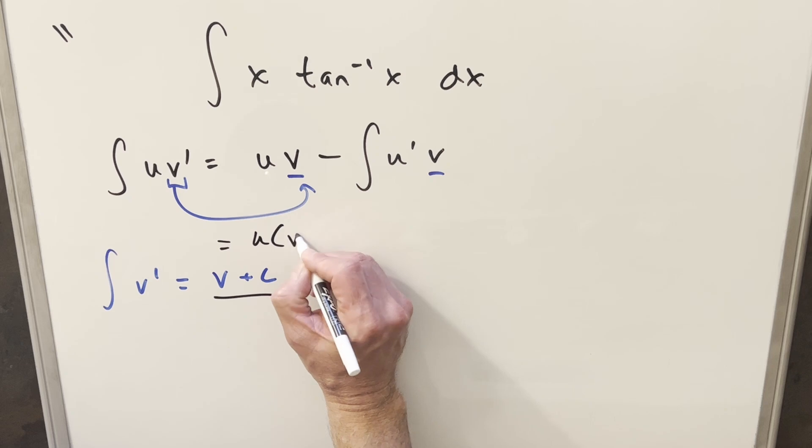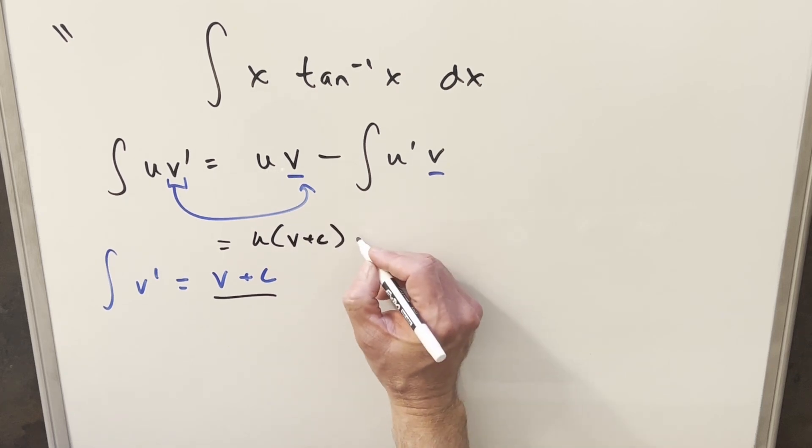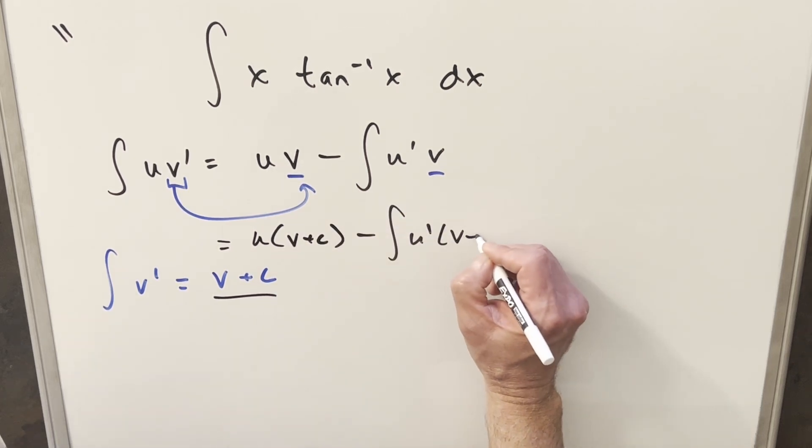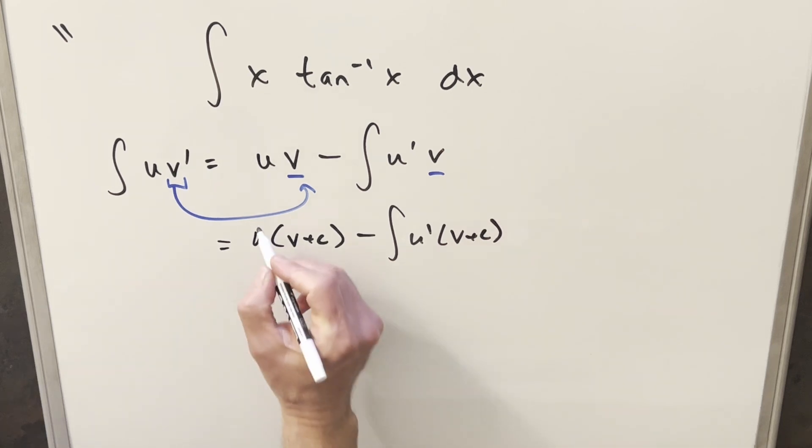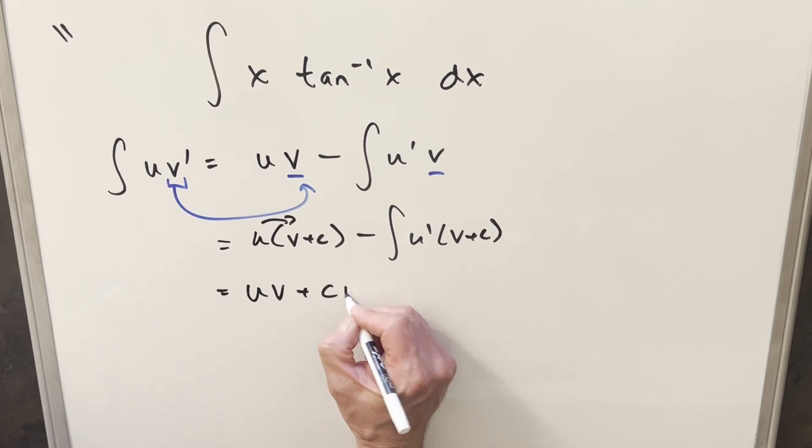So we have our formula, we plug in here v plus c here, and we're going to have minus integral of u prime times v plus c. Then we'll just distribute this in here, so what's going to happen is we're going to end up with u v. Then we'll have plus, I'll write this like c u.